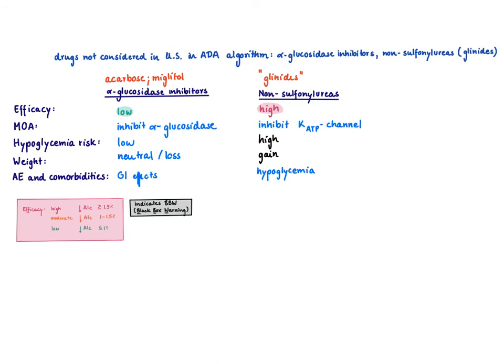There are two more classes that don't regularly show up on the American Diabetes Association algorithm but still might be tested on the boards: the alpha-glucosidase inhibitors and the non-sulfonylureas. The alpha-glucosidase inhibitors inhibit alpha-glucosidase, an enzyme that breaks down glycogen. If you cannot break down glycogen, you won't end up with monosaccharides like glucose. As we can only absorb monosaccharides, we absorb less glucose. That's a good mechanism of action.